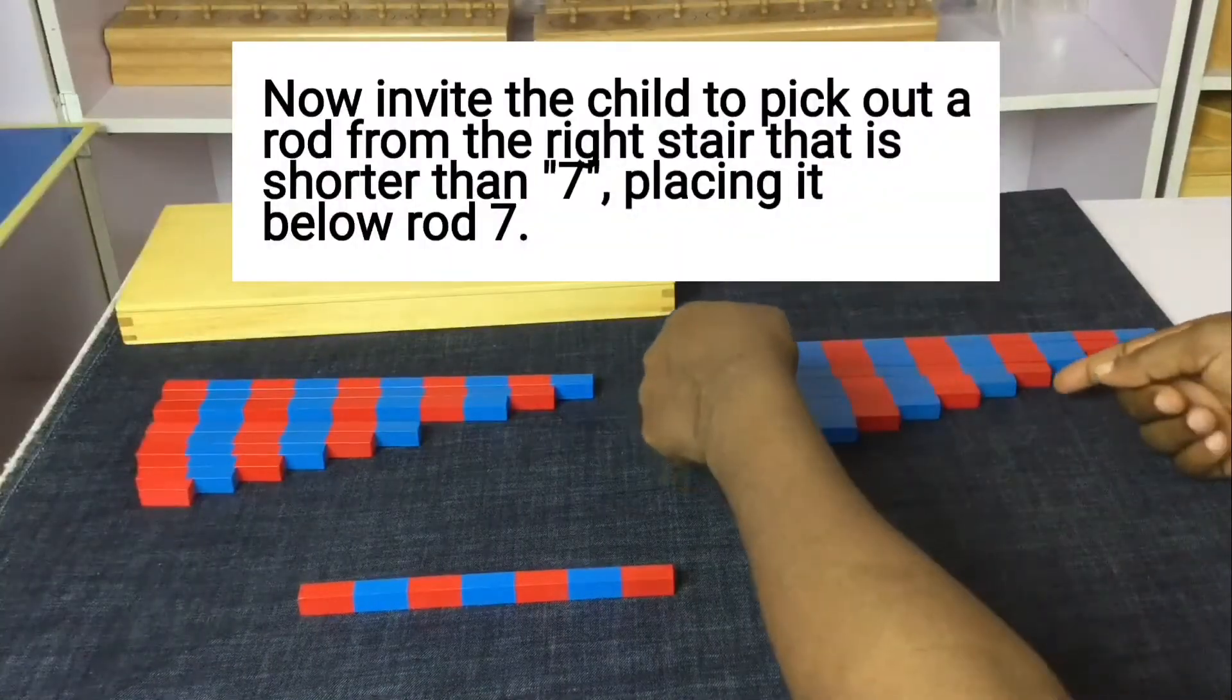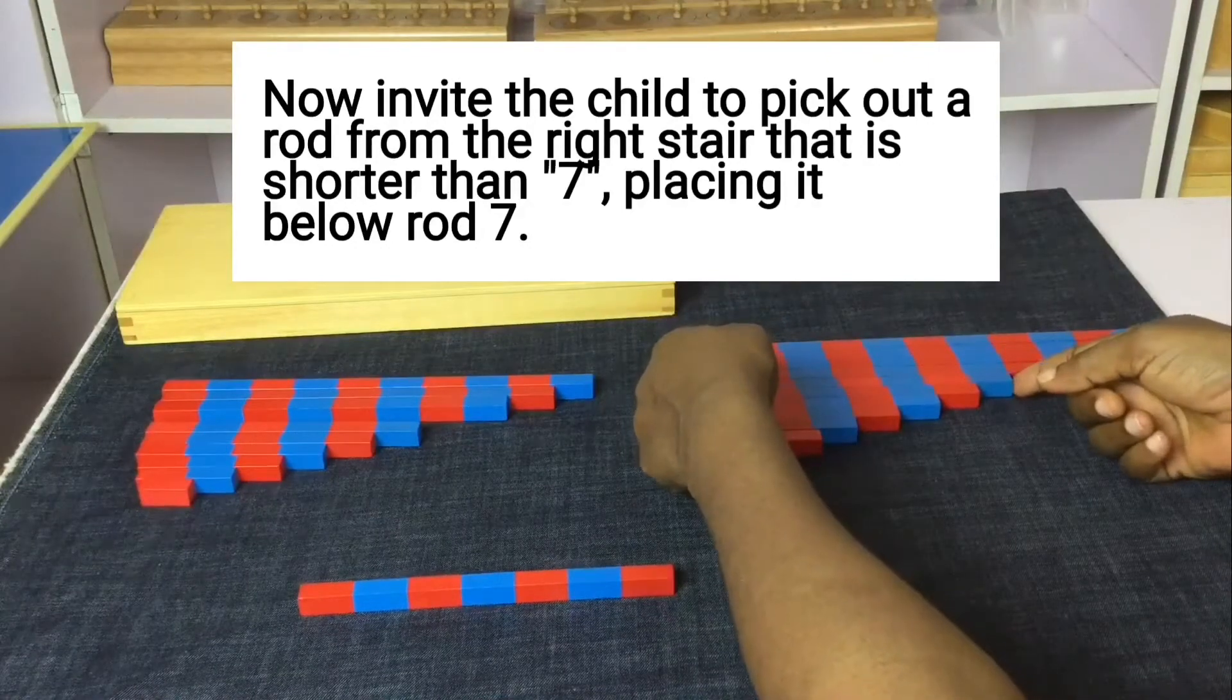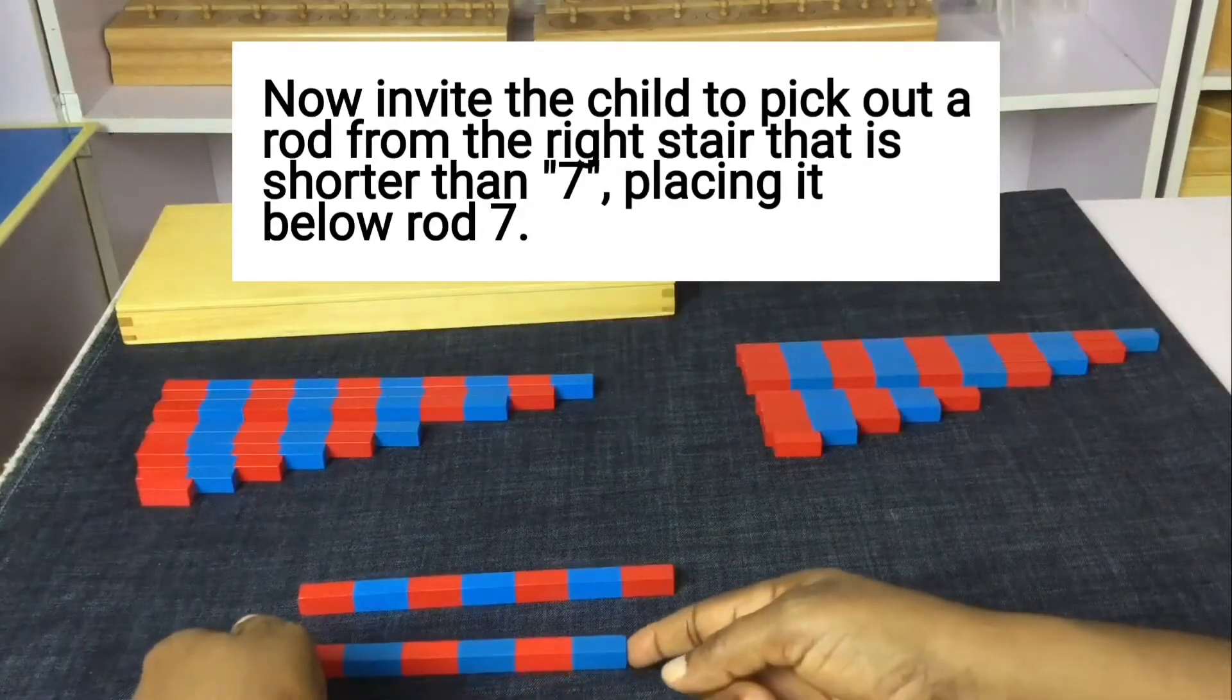Now, invite the child to pick out a rod from the right stair that is shorter than 7, placing it below rod 7.